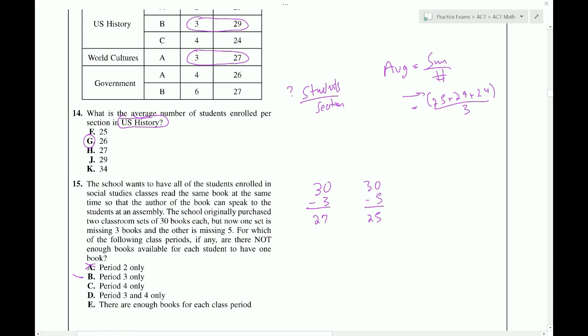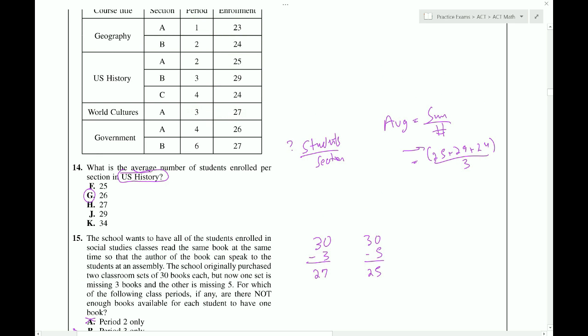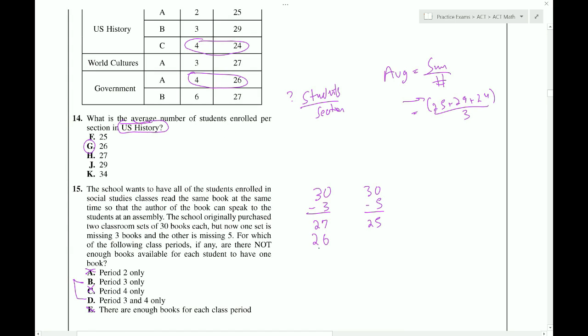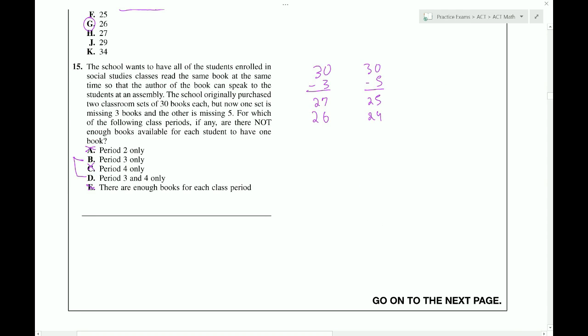So, already, we're leaning towards one of these two choices. So, we have to check period four. Period four is here and here. So, we have 26 students. We can give them the set of 27 books. And then, 24 students, we can give them the set of 25 books. So, that will be fine. So, our answer is going to be B.